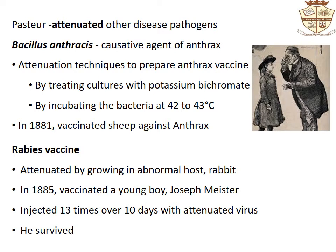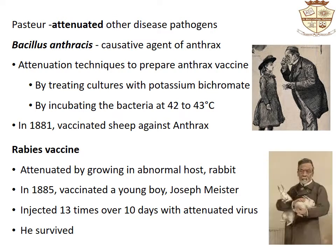Pasteur used a different approach to prepare the rabies vaccine. The pathogen was attenuated by growing it in an abnormal host — the rabbit — and after the death of the infected rabbits, their brains and spinal cords were removed and dried. In 1885, Pasteur administered his first rabies vaccine to a young boy, Joseph Meister, who had been bitten by a rabid dog and whose death was almost certain. Joseph was injected 13 times with the attenuated rabies preparations over the next 10 days, and Joseph Meister survived, protected from the deadly rabies virus.